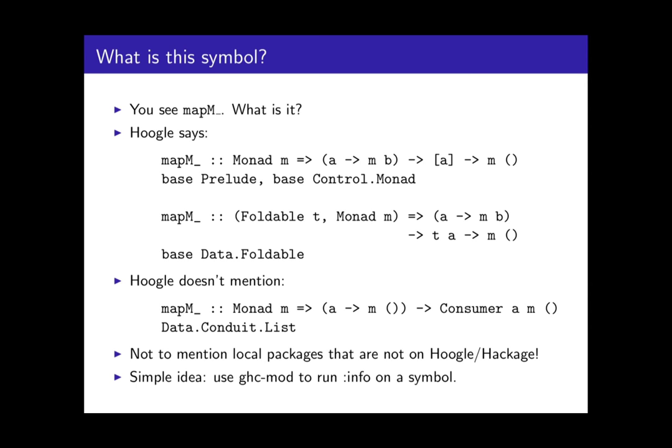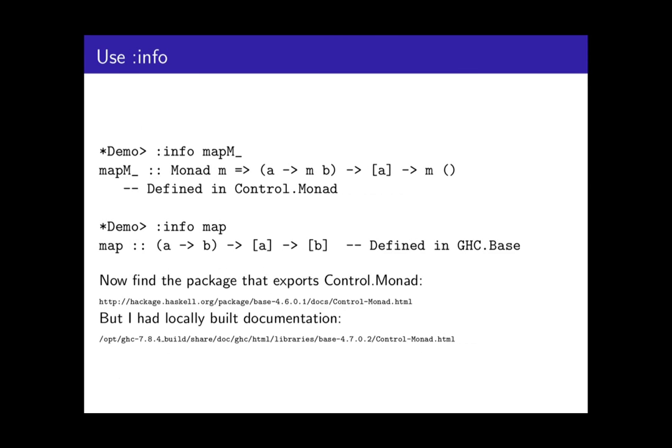I thought maybe the simplest thing you could do is use GHC mod, which is fantastic, just to have a look at the info thing, and then surely you could just look up the documentation. How hard could it be? And it turns out it's a complete mess. Something like mapM is in control.monad, and I think that matches correctly. But then if you ask for some other symbols like map, it'll tell you GHC.base.